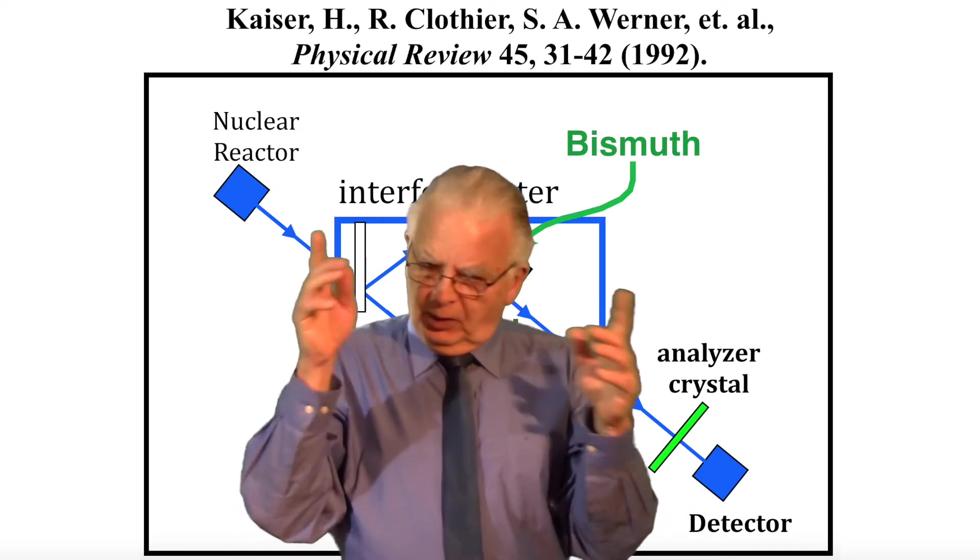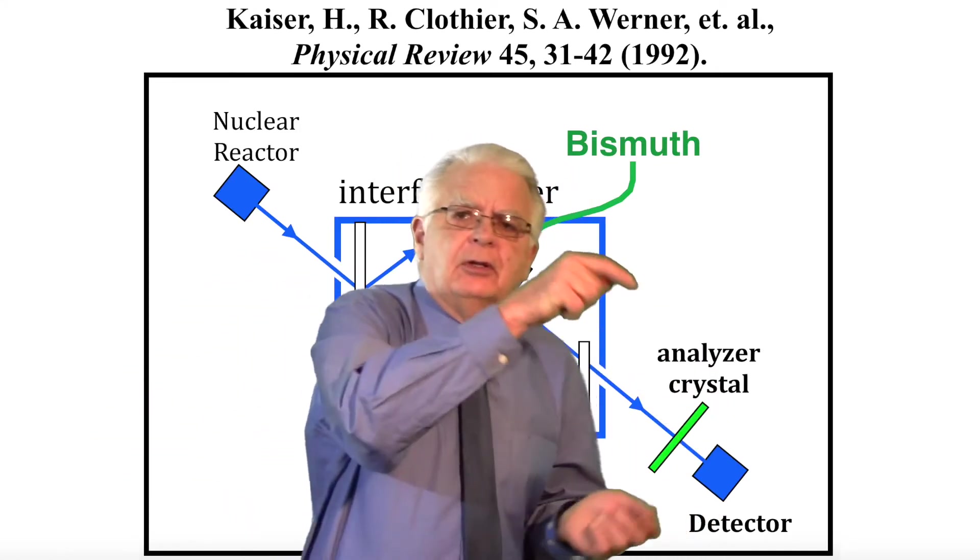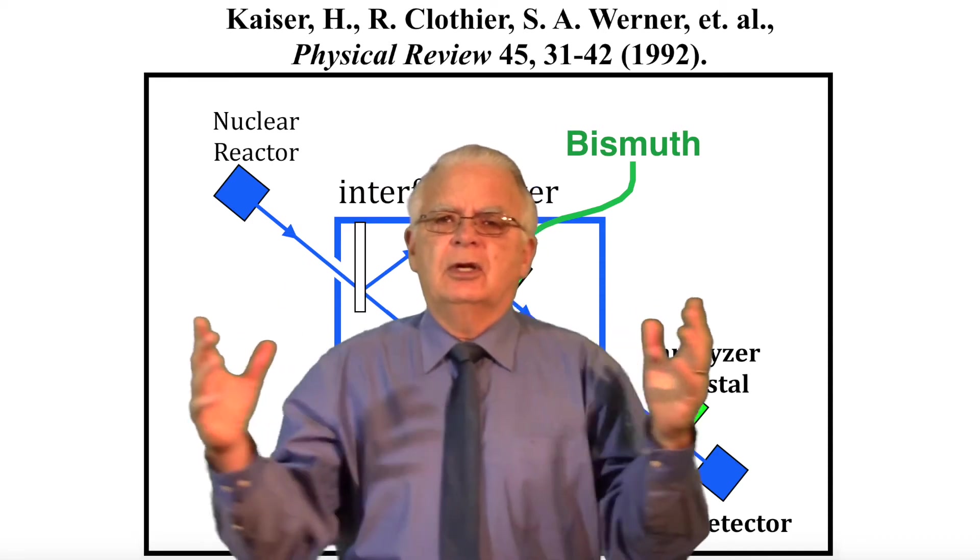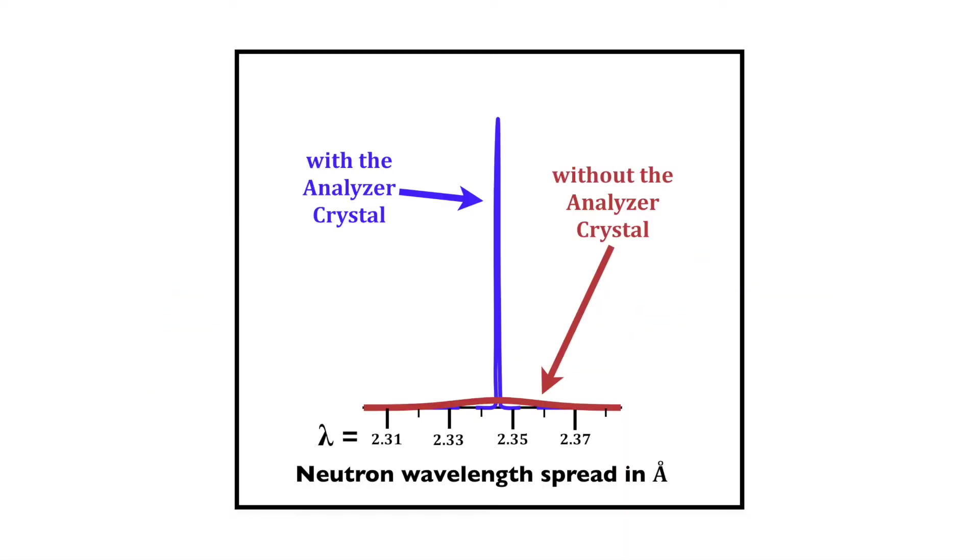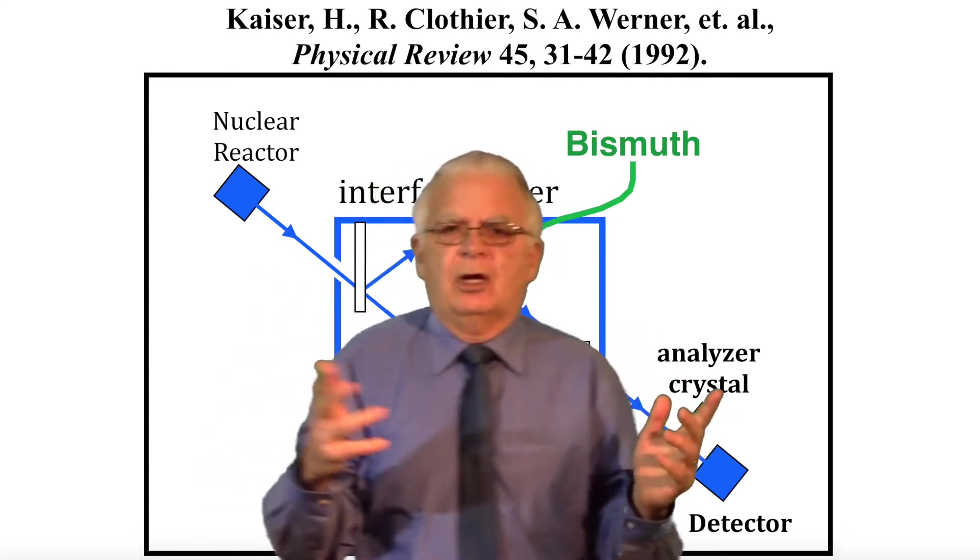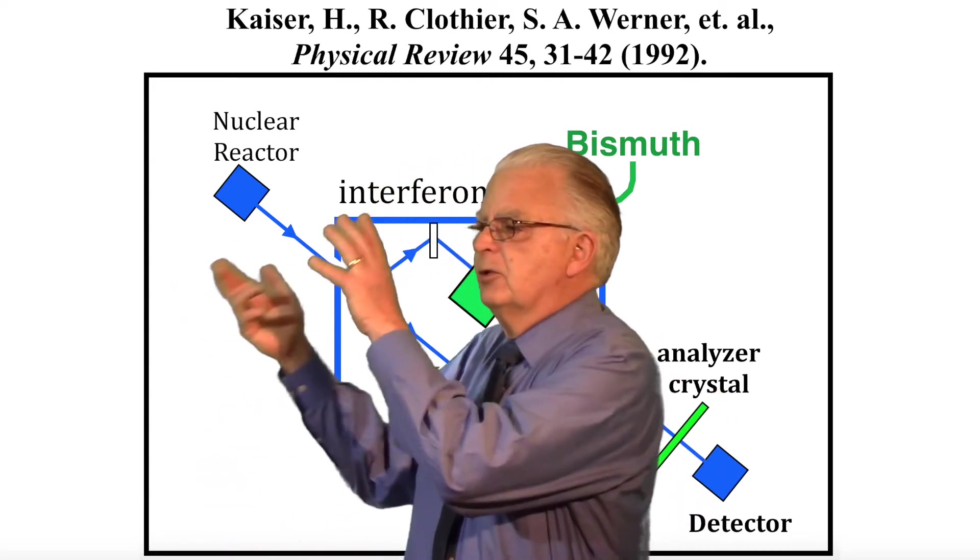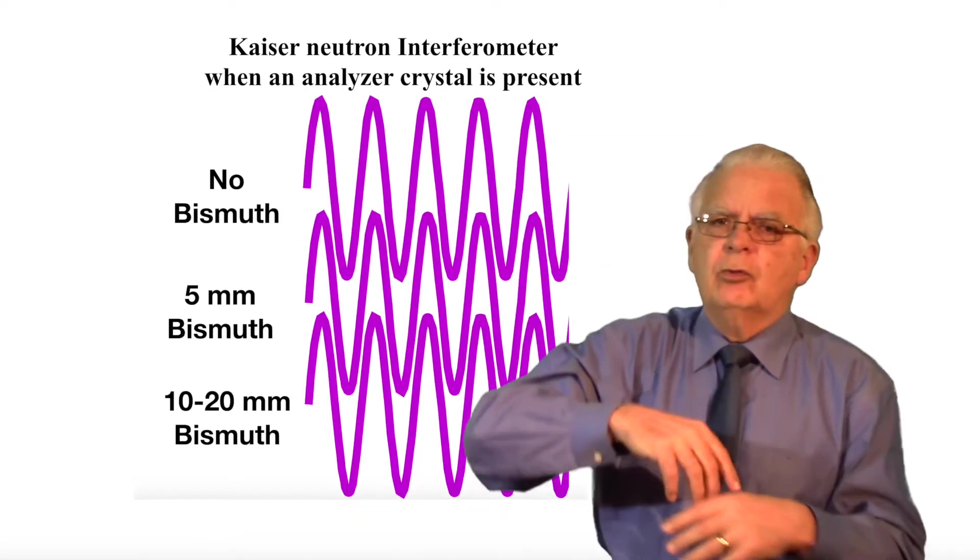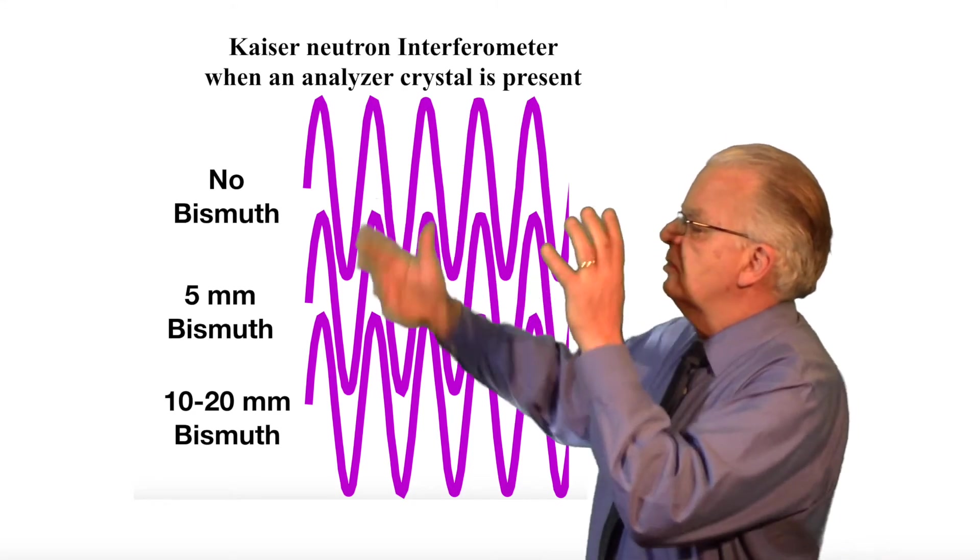Now they repeated exactly the same experiment with one tiny exception. Down here in front of the detector they put an analyzer crystal made of pressed silicon. The nature of this analyzer crystal is to reduce the scatter of the neutron beam and increase the penetration, the intensity of the beam in the center. So the beam should have more penetration, but that should not have any influence on the interference that took place previously inside the interferometer upstream, should it?